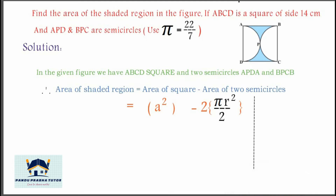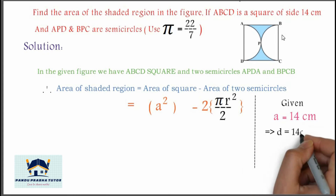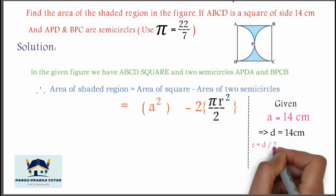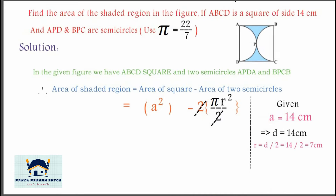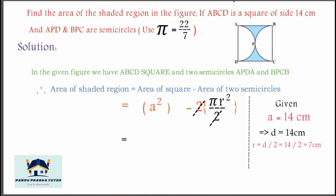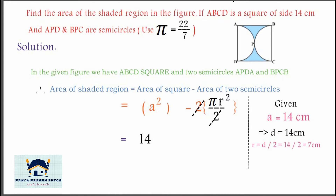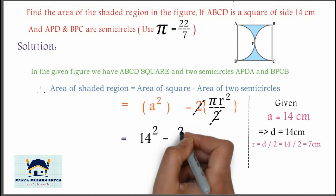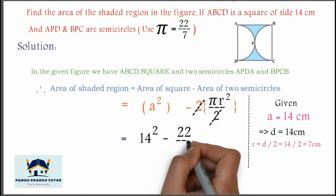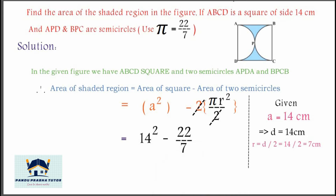Given: A is equal to 14 centimeters, which is equal to the diameter of the circle. So d equals 14 centimeters, and r equals d divided by 2, which equals 7 centimeters. Substituting: 14 squared minus π — 22 divided by 7 — into 7 squared, the twos cancel.